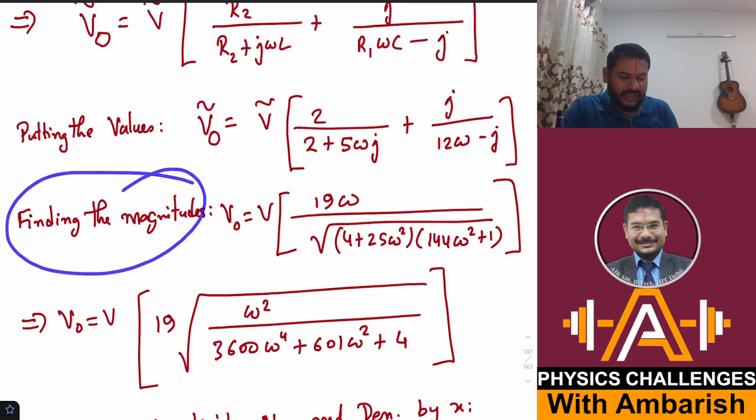Now I have to find the magnitude of the output voltage. The magnitude of a complex number is Z times Z star and square root. If you find that, it's simple. This is 12ω - j and this is 2 + 5jω. If you take the LCM and add, you will get 2j and from here -2j, so j parts cancel. You have 5ω and then take the LCM. 12 × 12 × 2 becomes 24, and 24 - 5 becomes 19ω.